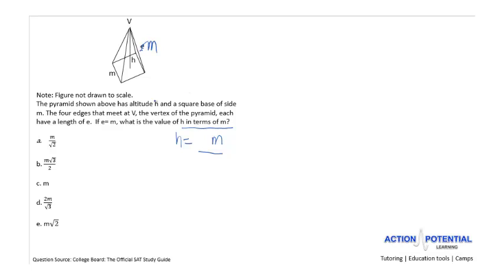Since we're probably dealing with a special right triangle — and I know this because of the answer choices with square root of 2 and square root of 3, and because I can draw a triangle in this figure — I'm going to assume the way to solve this problem is to figure out how a special right triangle can help me solve for h. What I could do is trace a triangle from h to m.